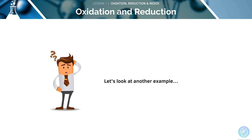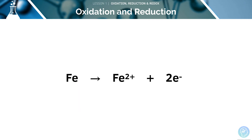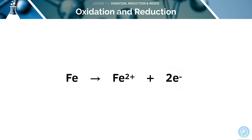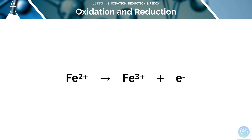Let's look at another example together. Iron forms a number of different ions, for example Fe²⁺ and Fe³⁺. If you think about how these might be produced from iron metal, the Fe²⁺ ion is formed by oxidising the metal and removing two electrons. The iron is now said to be in an oxidation state of +2. However, if we remove another electron, this gives us the Fe³⁺ ion.